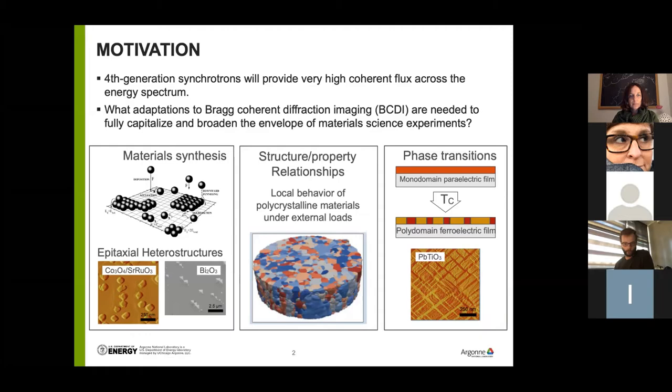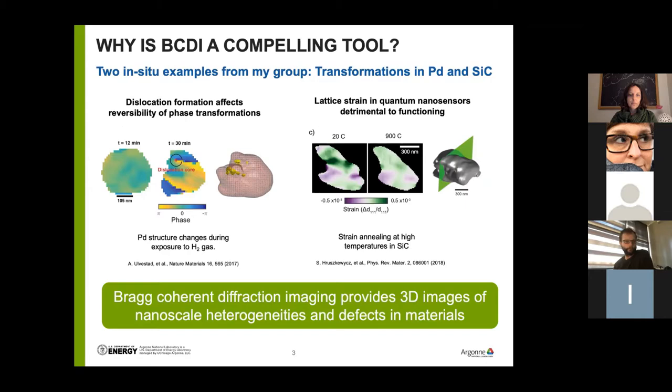One thing that all these examples have in common is that they require access to relatively difficult environments. Material synthesis is often in a liquid flux or gas phase environment at high temperatures. Grains inside polycrystals are often buried within half a millimeter of metal. Phase transitions occur at high temperatures, often under different surface conditions. So we need relatively high X-ray energies to access this. The typical 9 keV X-ray beam gets you so far, but we're going to need higher X-ray energies to get into the interior of some of these materials to interrogate grains.